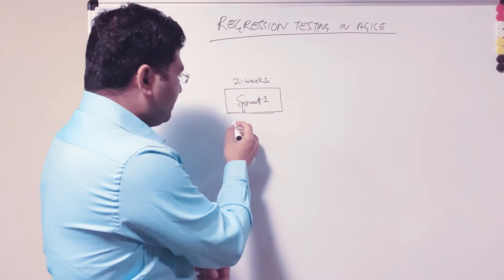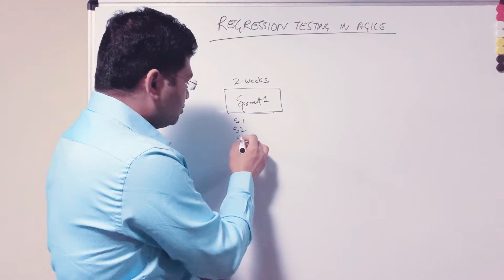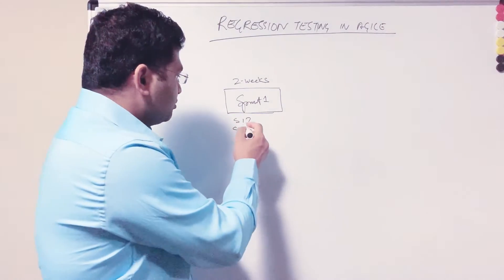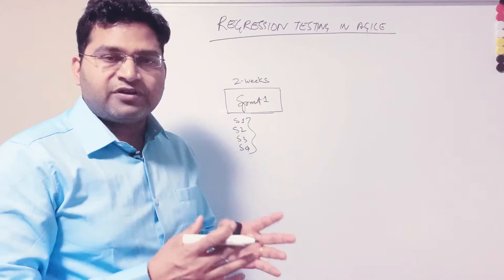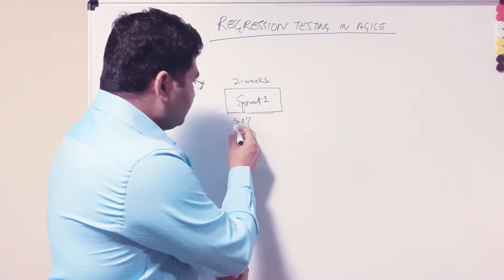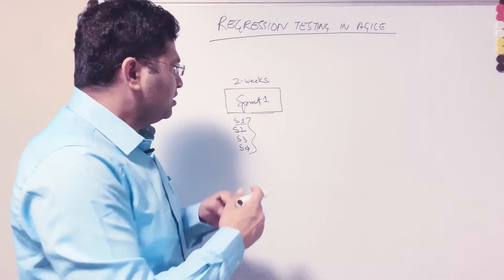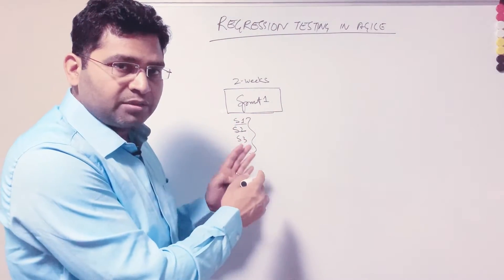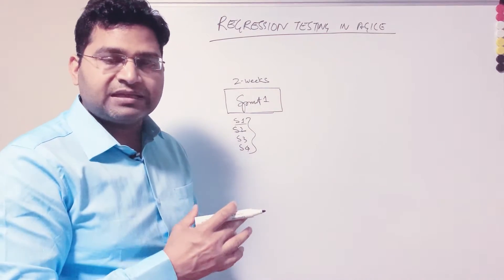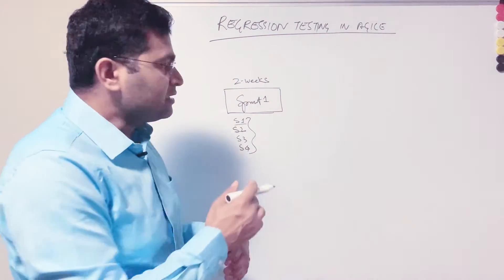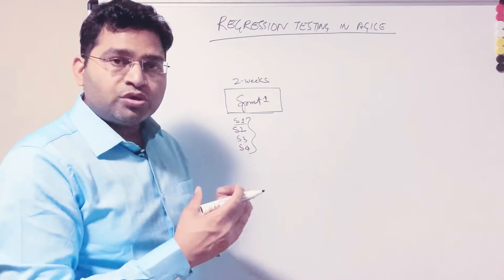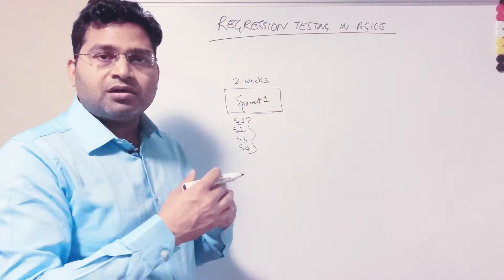In those two weeks, say for example you have picked four stories: Story 1, Story 2, Story 3, and Story 4. Stories are nothing but the requirements in an agile or Scrum project. They define the functionalities and acceptance criteria to be implemented in the sprint. Developers start working from these user stories, testers collaborate with developers and BAs, writing test cases and testing the stories to ensure acceptance criteria is met.